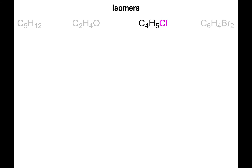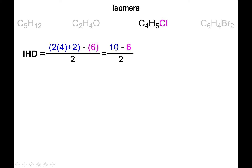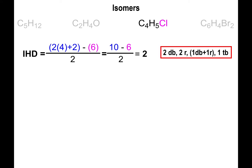The next example is C4H5Cl — it looks simple but produces many isomers. Applying the IHD formula: 4 carbons gives 2×4+2 = 10; we subtract 6 equivalent hydrogens (counting the halogen as a hydrogen per the rules) and divide by 2, giving an IHD of 2. This means we could have two double bonds, two rings, one double bond and one ring, or one triple bond.